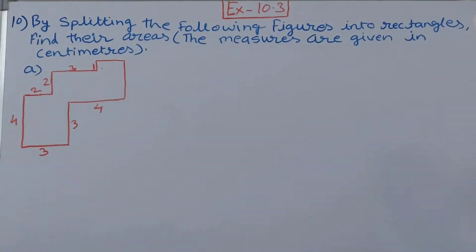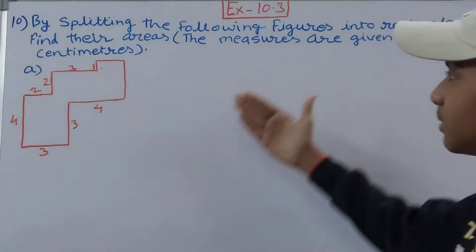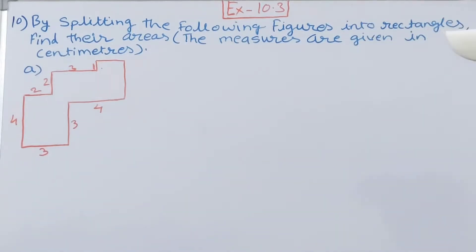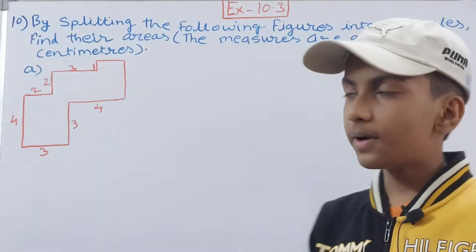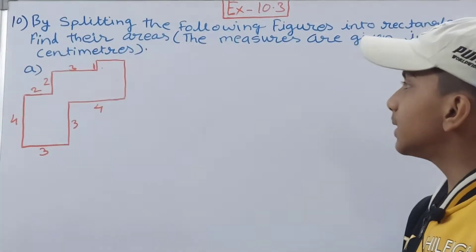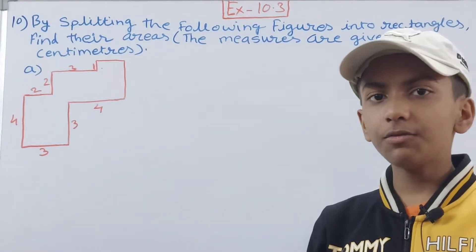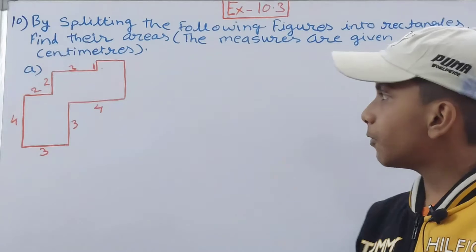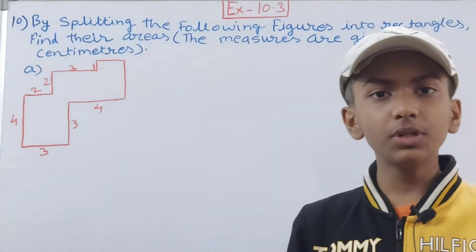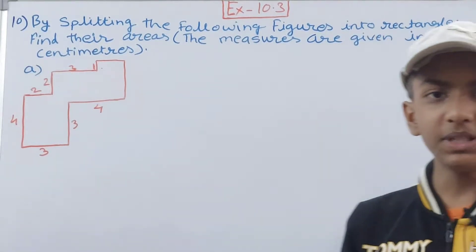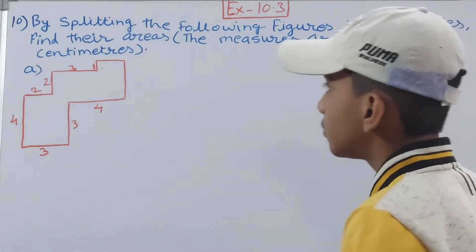The question says: by splitting the following figures into rectangles, find their areas. The measures are given in centimeters. We have one figure given to us and we have to split it into rectangles to find the area. We don't have any particular formula to find the area of irregular figures, so we use a method of splitting the figure into pieces — specifically rectangles.